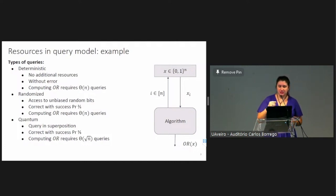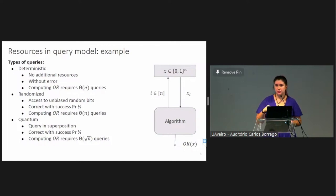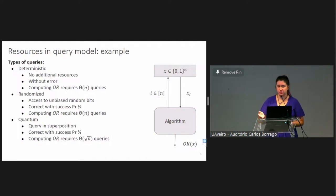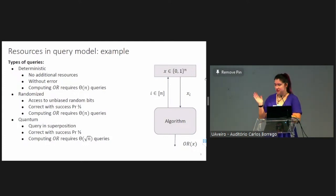The next model is the randomized query model. In that model, the algorithm has access to unbiased random bits and has to output the correct value of the function for all inputs with success probability at least two-thirds over the internal randomness. One can show that in this model, we still have to make omega of n queries in order to evaluate OR. And the last one is the quantum query model. In that model, the algorithm is allowed to query the oracle in superposition, and it again has to output the correct value with success probability at least two-thirds for all inputs. By Grover's result, one can do this in order square root of n queries, and this bound is tight.